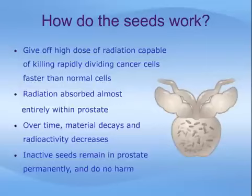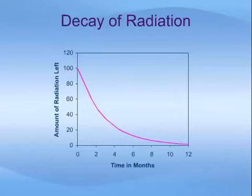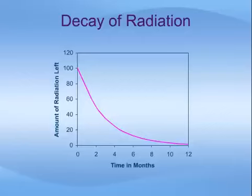Over time, the radioactive material decays. Its radioactivity — for iodine seeds, for example — decreases by half every 60 days, so that by 6 months about 85% of the radiation has been given, and by 1 year it is almost entirely delivered. The inactive seeds remain in the prostate permanently and do no harm. This slide shows graphically how the radioactivity of the seeds decreases over time, such that by 12 months there is almost no ongoing effect, with the majority of the dose given within the first 3 months and then rapidly trailing off.